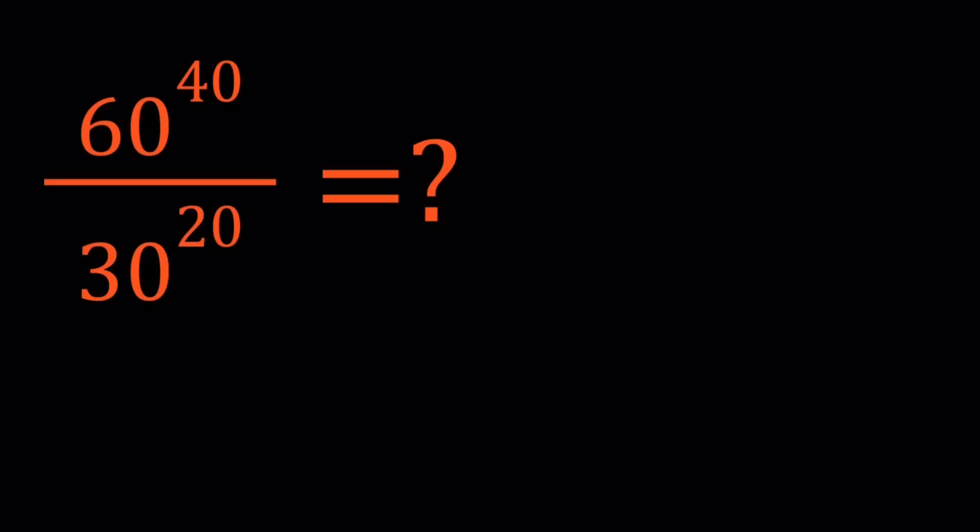So we have 60 to the power of 40 divided by 30 to the power of 20. Now, these are very large numbers. If you want to know how large they are, I can go ahead and show you on Wolfram Alpha so you get a better idea. And then we're going to go with the solutions. All right, let's go ahead and take a look.